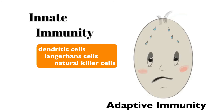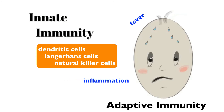These innate immune cells attempt to rid the body of foreign organisms. Part of innate immunity also includes reactions such as a fever, which is meant to make the environment inhospitable to foreign organisms, and inflammation, which I discussed previously. The other form of immunity is adaptive, which develops over time upon exposure to specific pathogens. That is really the realm of cells known as lymphocytes — though natural killer cells are a type of lymphocyte, they play a part in innate immunity.